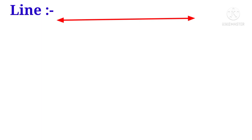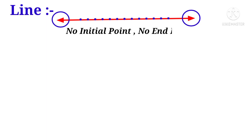Now let us see what is a line. Draw the picture of a line. Observe that there are infinite number of points on a line. Also observe the arrow mark symbol on either side of the line. It indicates that there is no starting point, that is no initial point and no end point. It is infinitely extended on either side.